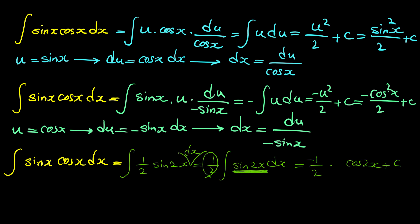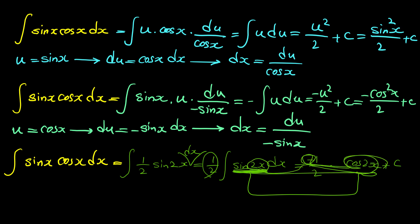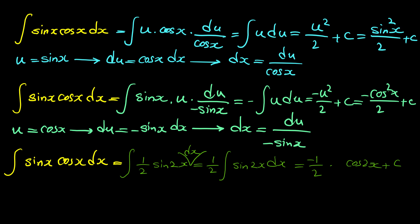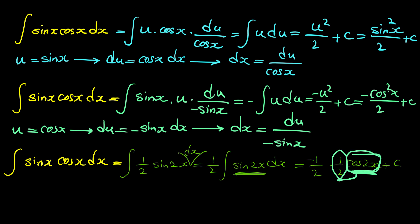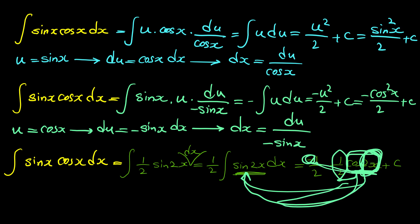Because we have 2x instead of just x, the integral of sine of 2x is not simply negative cosine of 2x — we must multiply by the reciprocal of the coefficient 2, which is one half. So the integral of sine of 2x is negative one half cosine of 2x.